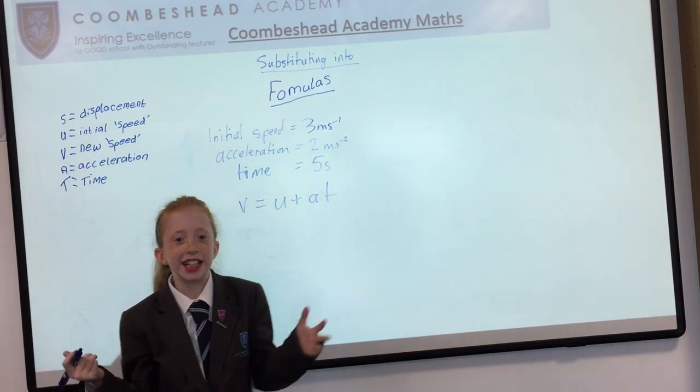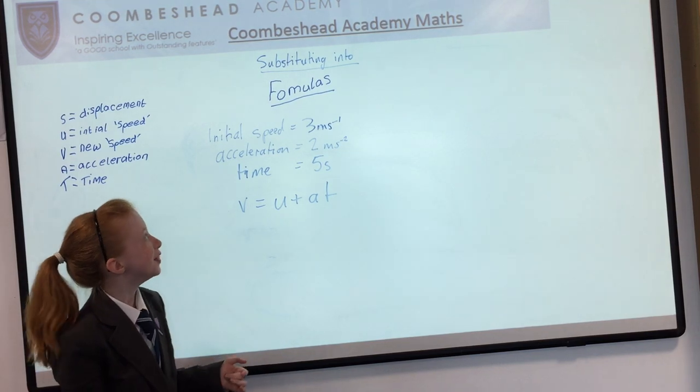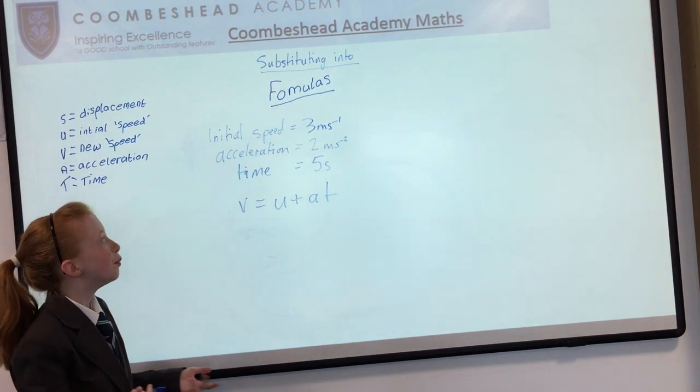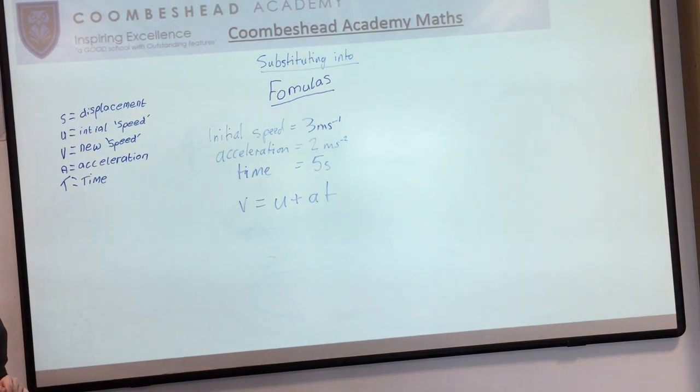Welcome to our Kingston Maths videos and today we are substituting into formulas. We are using the equation for velocity with U as initial speed, A as acceleration, and T as time.